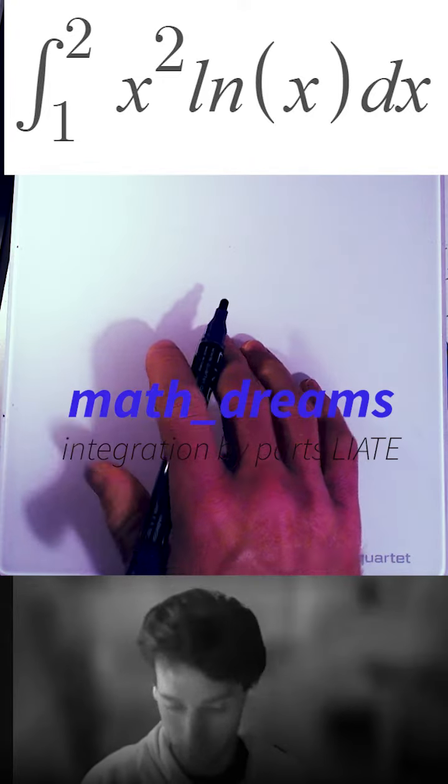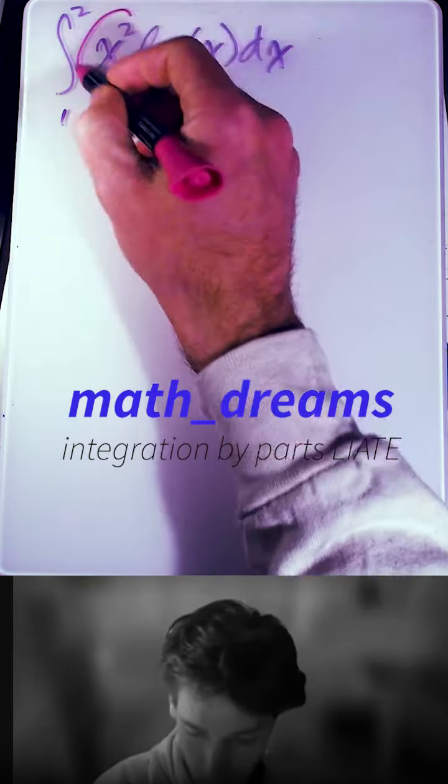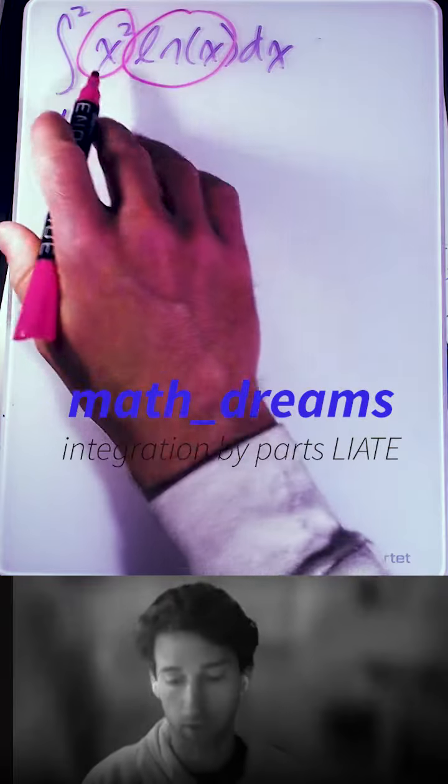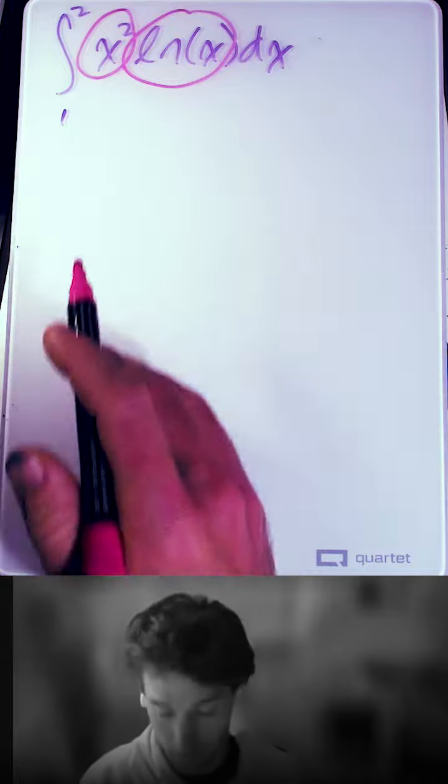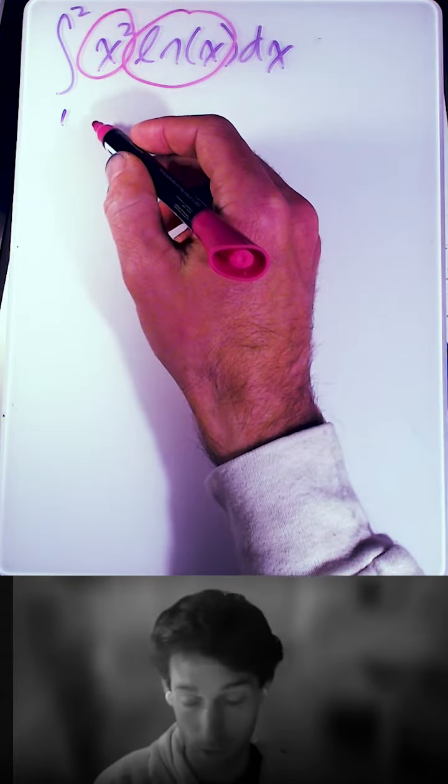So I have a student who has this classic integration by parts problem on his last quiz, an x squared and an ln of x. So we have a product within the integral. And when you have a product within the integral, you can use integration by parts to solve it.